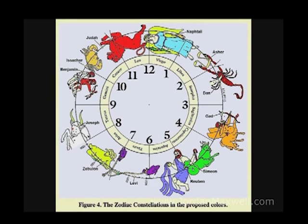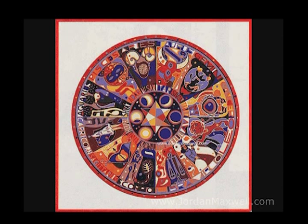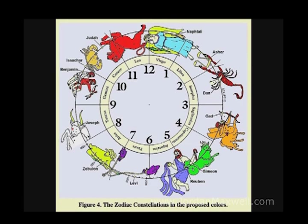In the Hebrew tradition you have something called the twelve tribes of Israel. In point of fact, historically there were no twelve tribes of Israel that ever existed. The twelve tribes of Israel are the twelve astrological signs of the Zodiac in the ancient Hebrew religion.